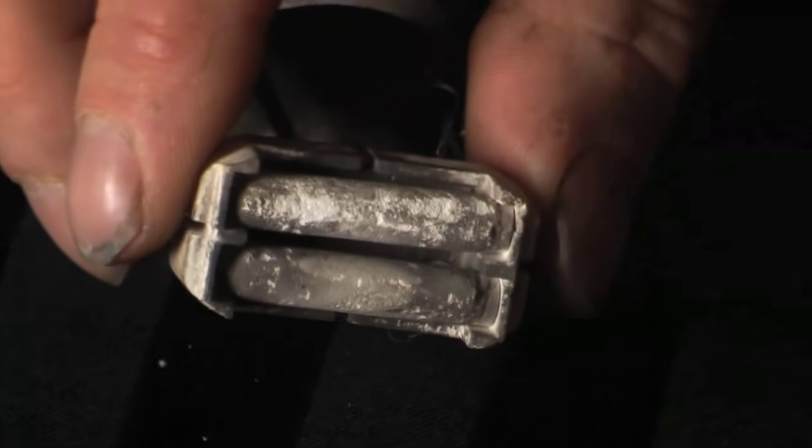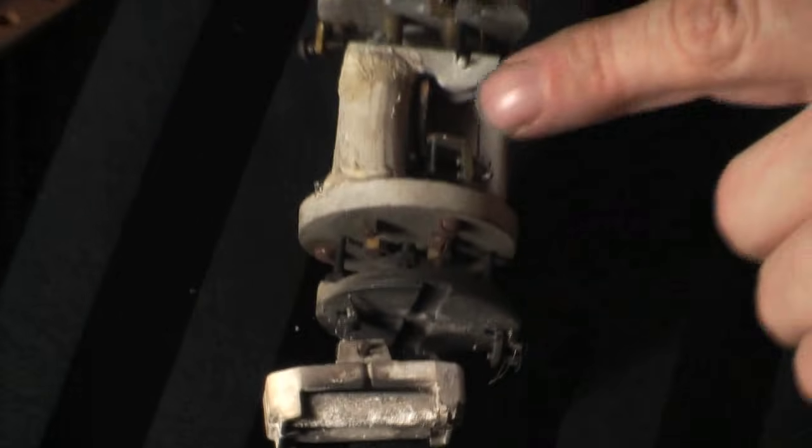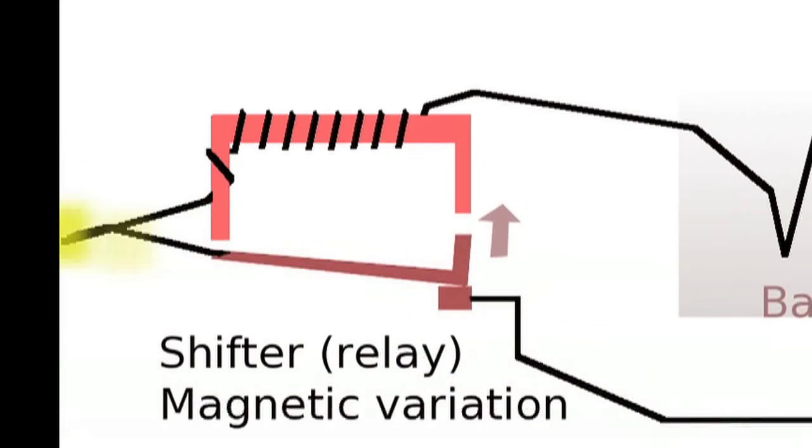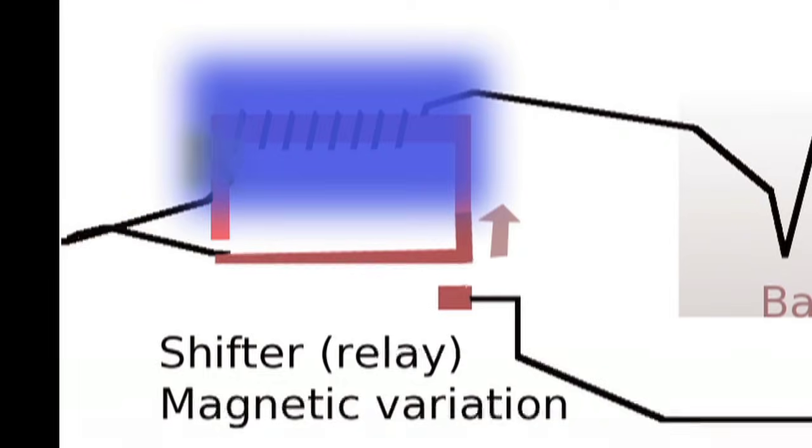As soon as the glower was glowing, the heater was no longer necessary. In fact, if the heater kept operating it would damage the glower. So that's where the shifter comes in. It's a type of relay that when the resistance of the glower changes, the coil senses it because it's in series and it automatically switches the heater off as long as the glower is lit. And then the lamp just continues to glow.